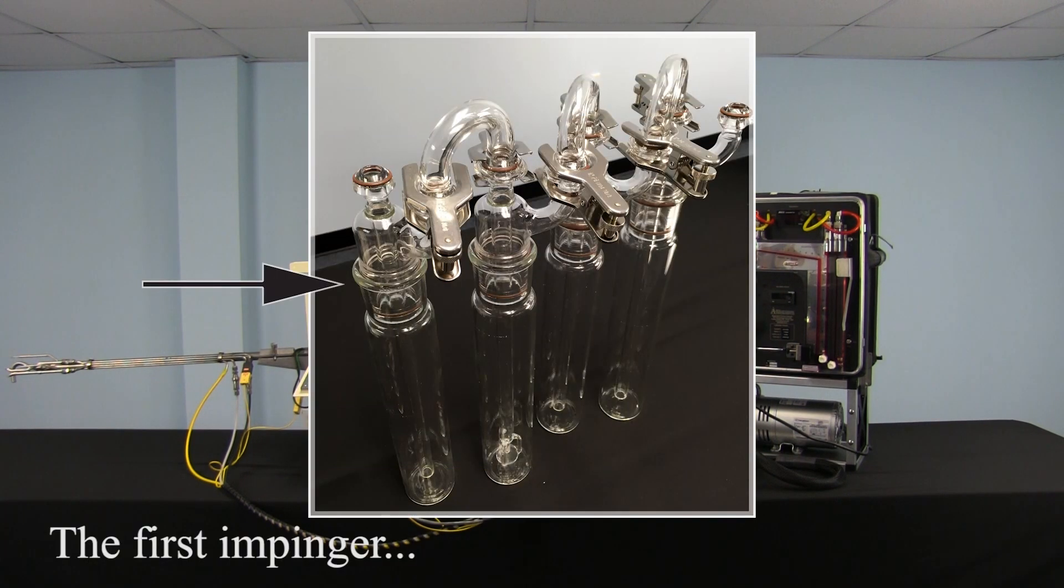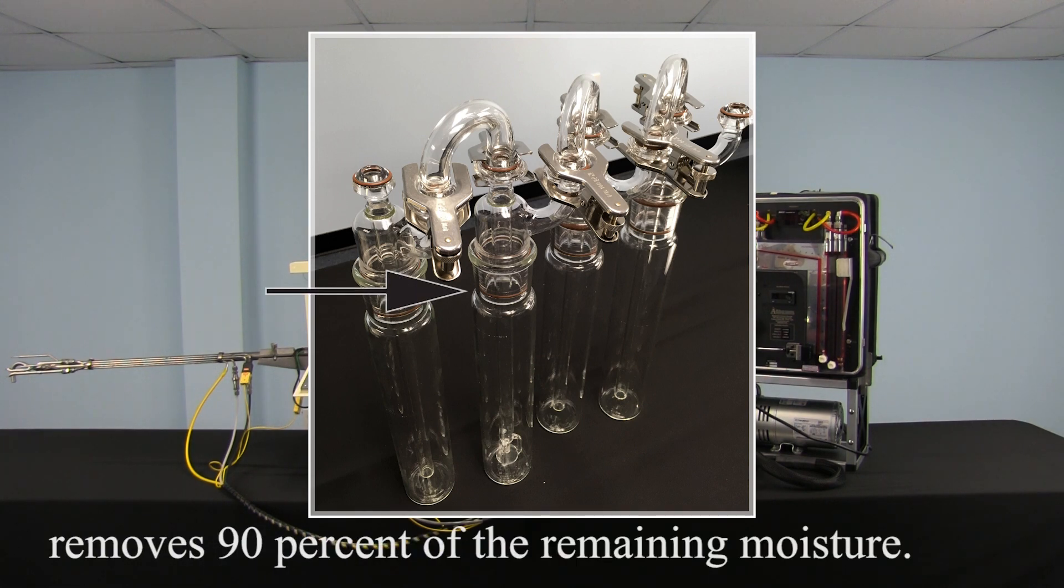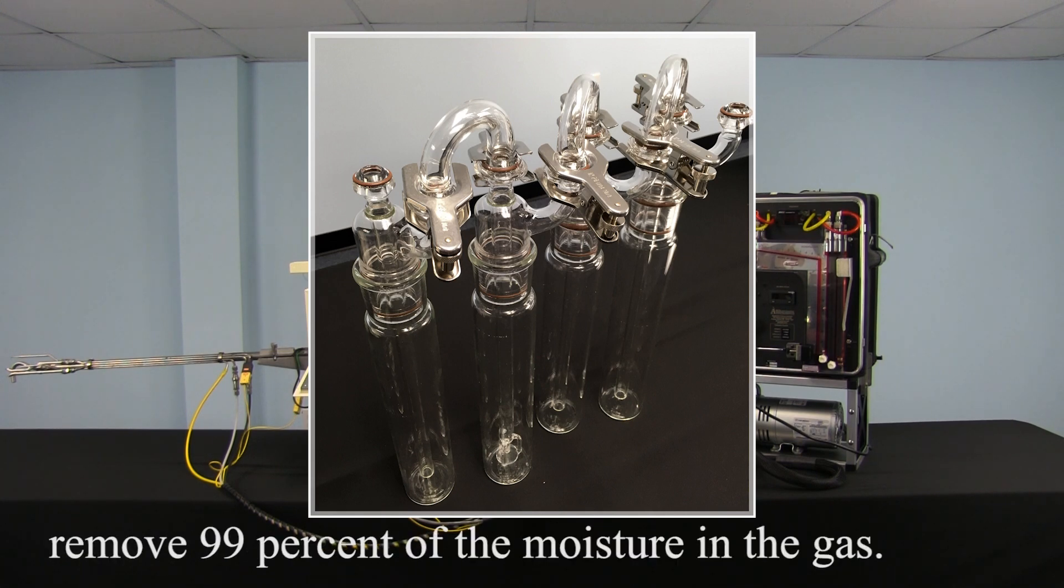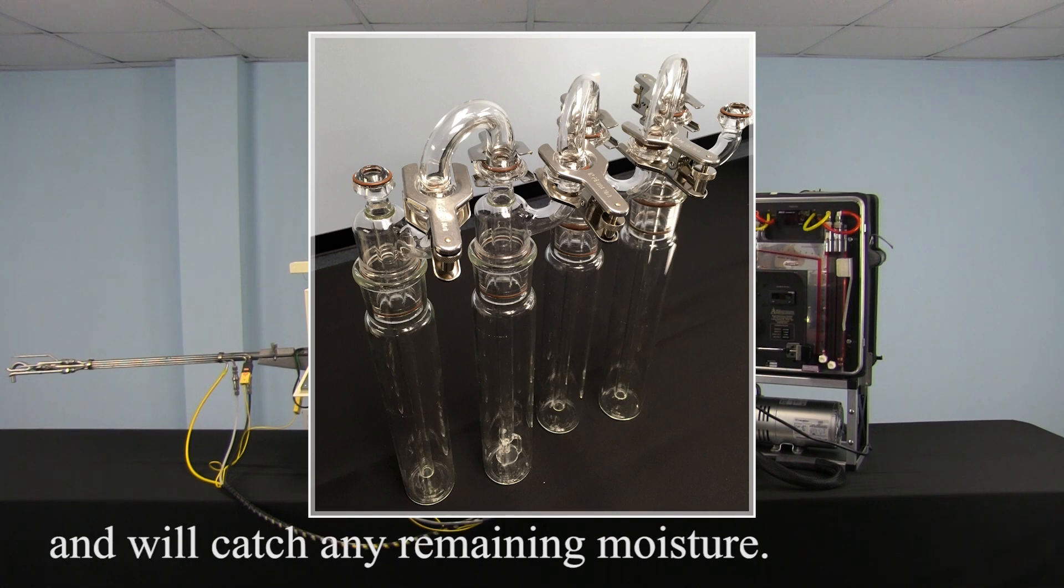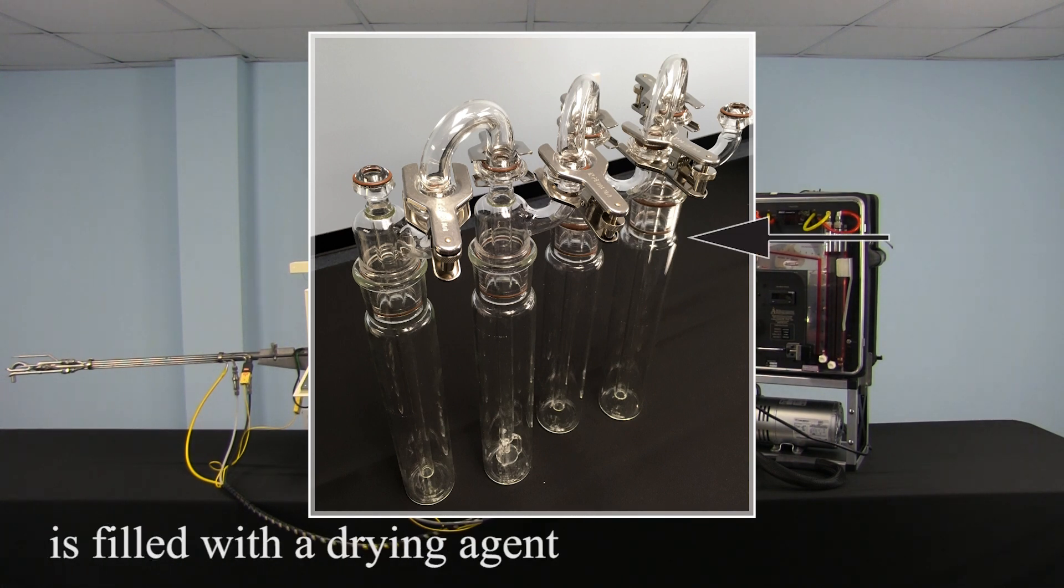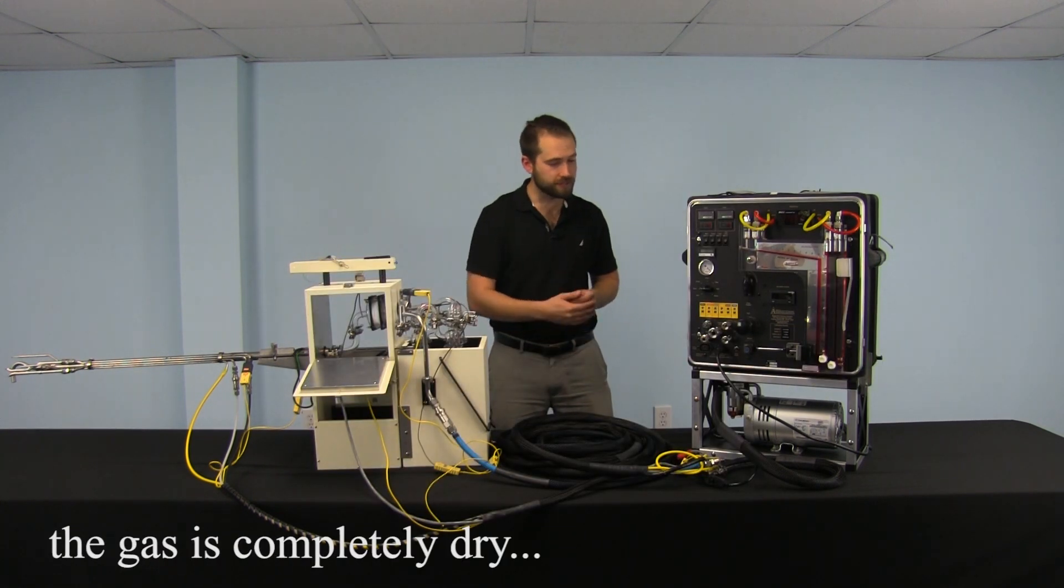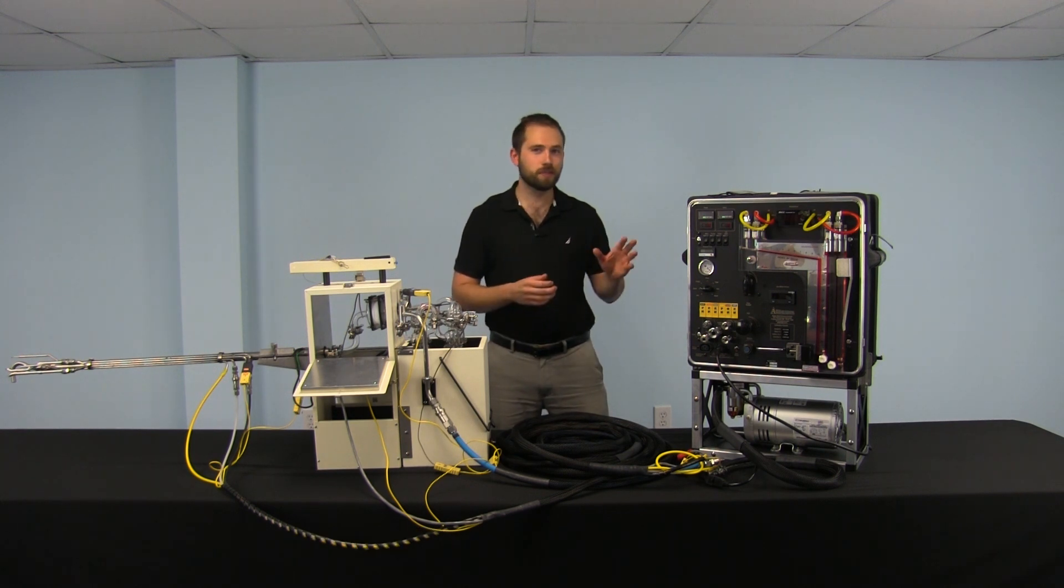The first impinger will take out 90% of the moisture in the gas. The second impinger will take out 90% of the remaining moisture in the gas. So the first two impingers alone take out 99% of the moisture in the gas. The third impinger is typically empty, but if there's any remaining moisture it will get trapped in the third impinger. And the fourth impinger is filled with a drying agent, silica gel, to make sure that as the gas passes through the system and ultimately ends up in the dry gas meter, that it's completely dry. We don't want to ruin the dry gas meter with wet gas.